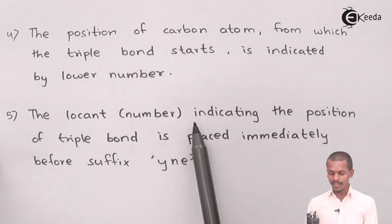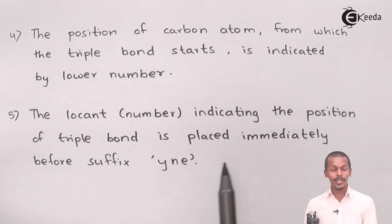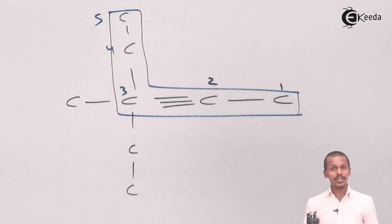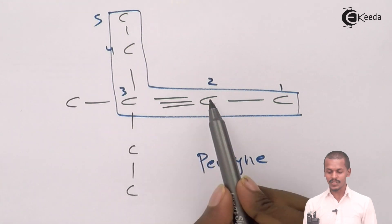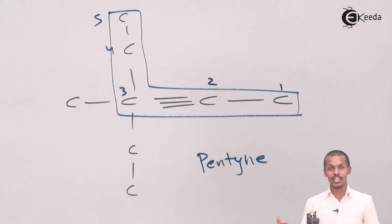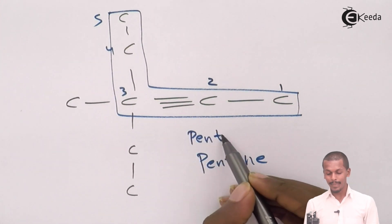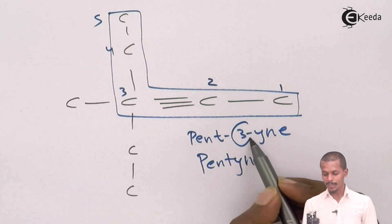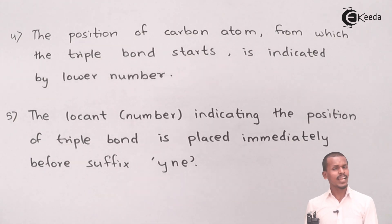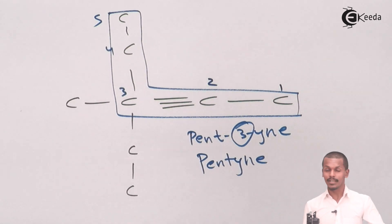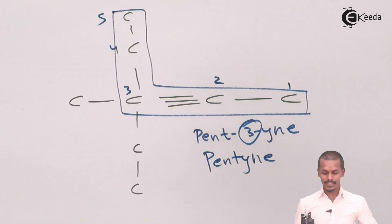The fifth rule is that the locant indicating the position of the triple bond is placed immediately before the suffix '-yne'. So for the five-carbon chain where the carbon-carbon triple bond is between carbon 2 and carbon 3, the name is not simply pentyne — the correct name is pent-2-yne. This locant is very important as it tells us exactly where the carbon-carbon triple bond is located in the parent chain.